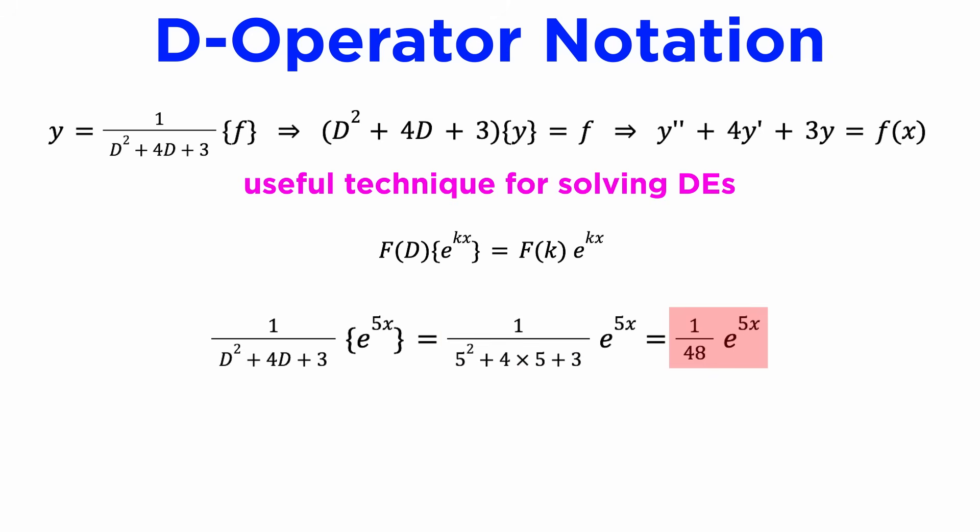we get 1 over 48 e to the 5x, which represents the particular integral to the differential equation y double prime plus 4y prime plus 3y equals e to the 5x. This is essentially the method of undetermined coefficients for finding particular integrals to non-homogeneous ODEs we learned earlier.